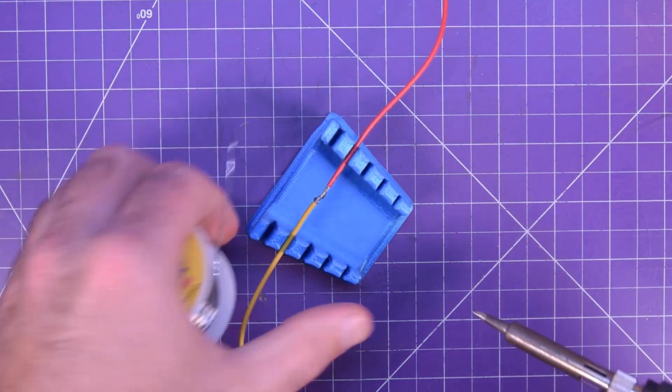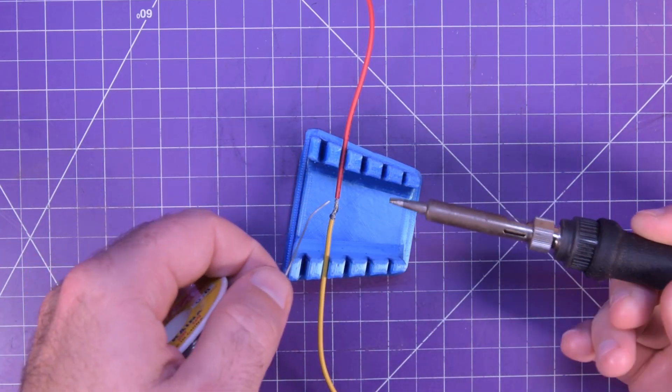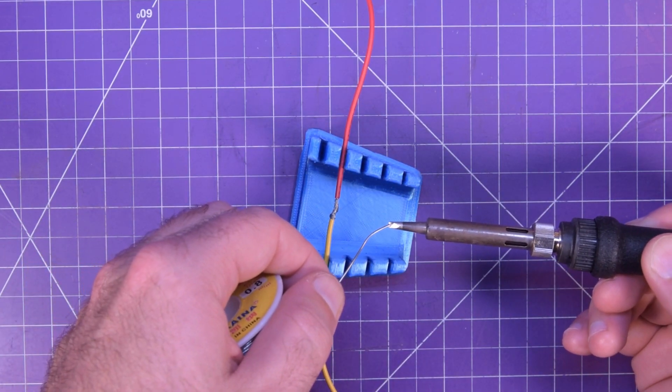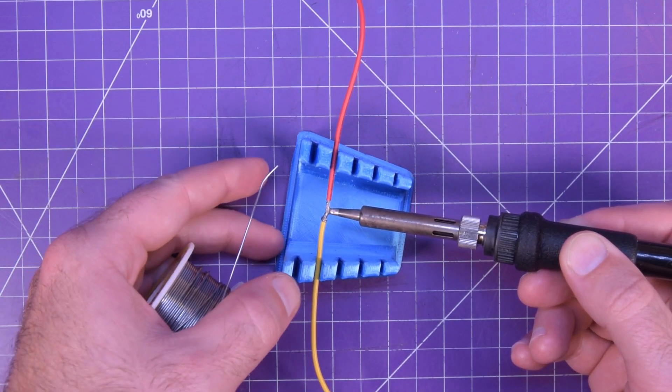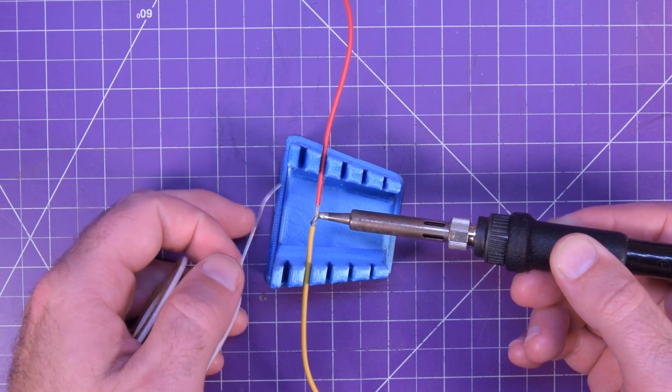And then I typically put a little bit of solder on the tip, just to help the heat transfer. And then you will press this up on the wire.